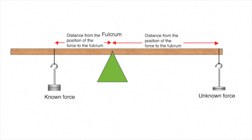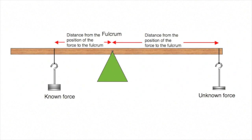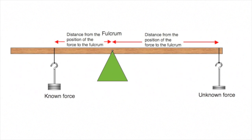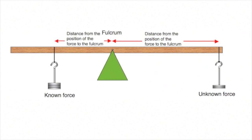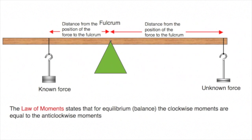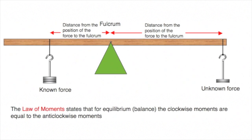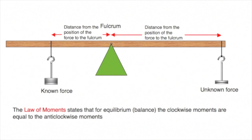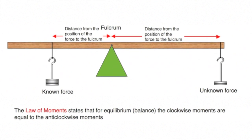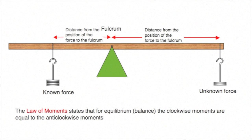This diagram shows a typical classroom setup to investigate moments and the law of moments. We use a regular uniform ruler or stick balanced in the centre with a known weight on one side, and use that to measure an unknown weight on the other side. To calculate the value of that unknown weight we use the law of moments, which states that for balance — that is, for equilibrium — the clockwise moments are equal to the anti-clockwise moments.